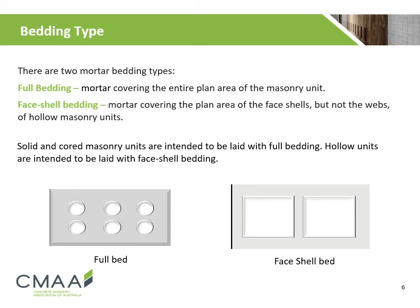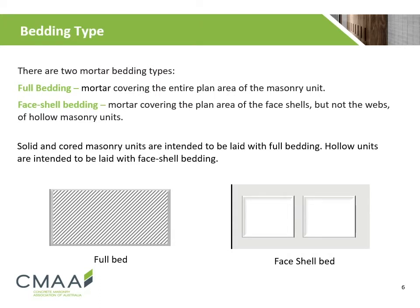There are two types of mortar beddings: full bedding and face shell bedding. Full bedding refers to the mortar covering the entire plan area of the masonry unit and is common in both solid and cored block work. Face shell bedding refers to the mortar covering only the plan area of the face shells, not the webs, and is common in hollow block work.